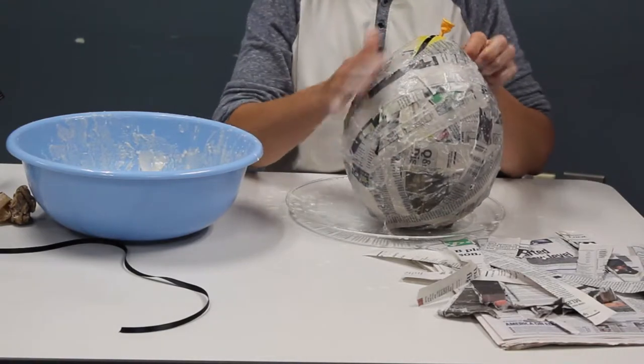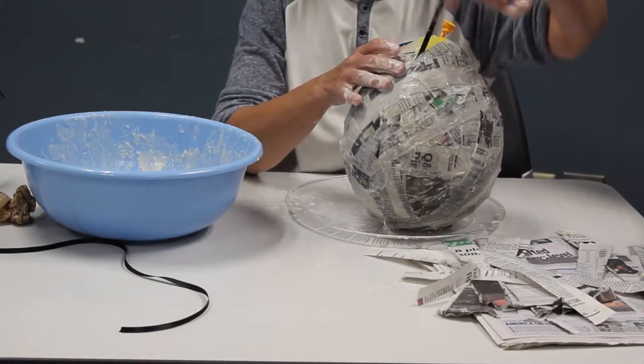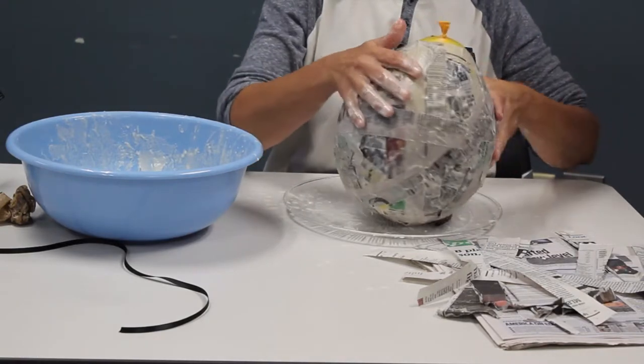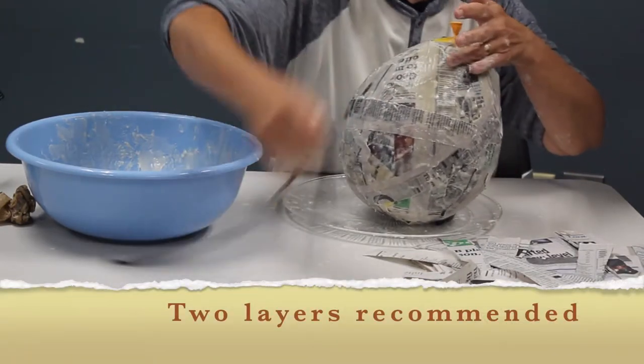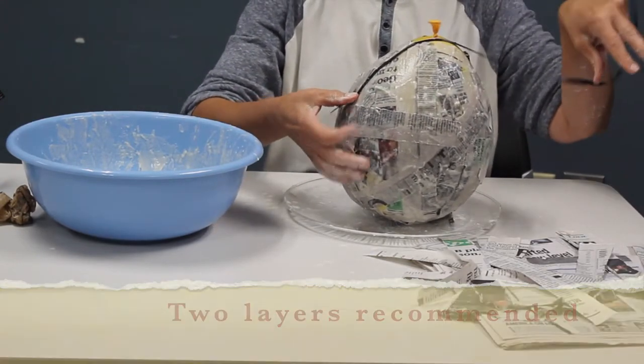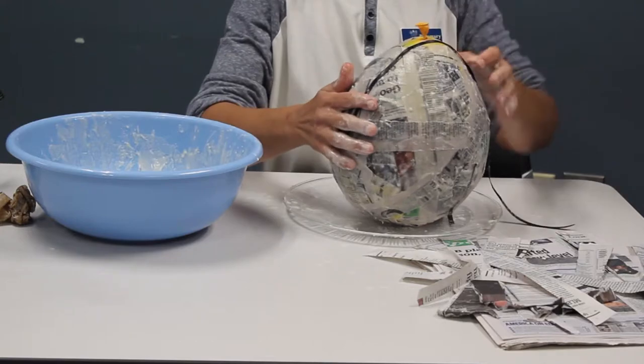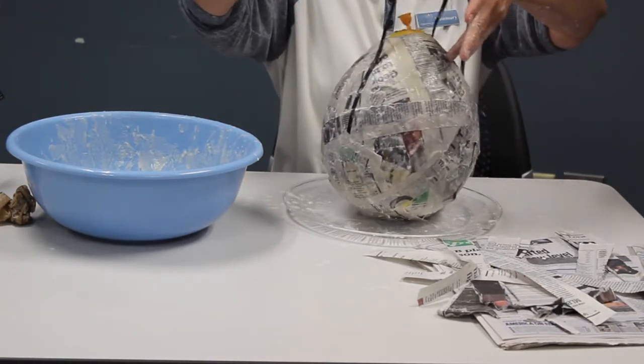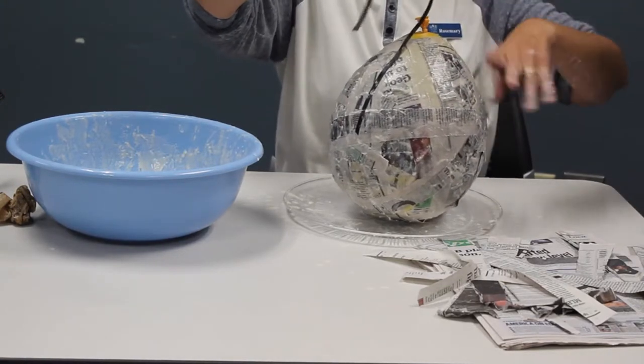And surprisingly enough, this makes a pretty strong layer, even with just one. But you might want to do two layers. It will need to dry maybe 24 hours. So I've kind of positioned these so that they're on opposite sides and they're right above the hole.